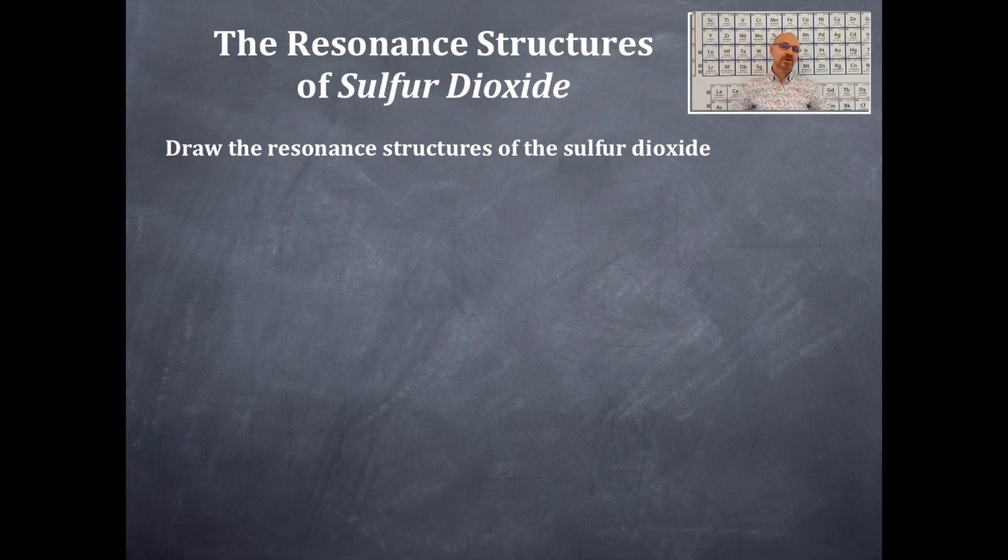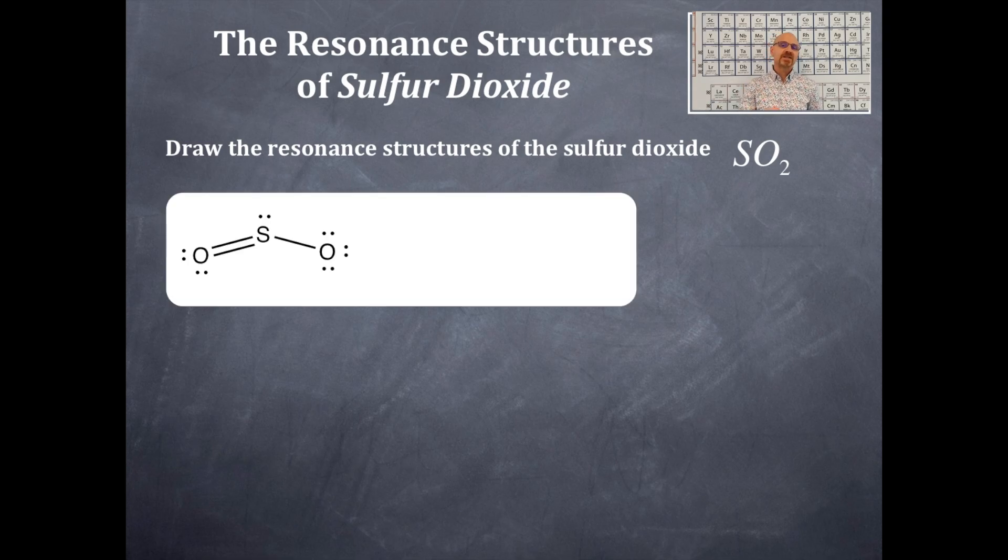We're going to do a Lewis dot structure for sulfur dioxide. There's the formula for sulfur dioxide. We have actually already done the Lewis structure of sulfur dioxide before, so you should be familiar with this one. This is one of the Lewis dot structures for sulfur dioxide.